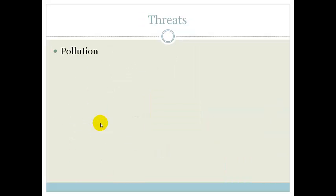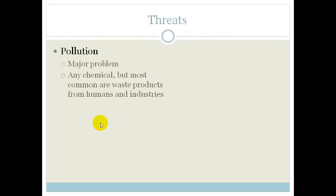The threats. The main threat is pollution. This is a major problem. Water is one of our most valuable resources, and it is slowly becoming more and more polluted. The main source of pollution comes from humans and industries—it's our waste products. We need to be careful not to litter and not to cause pollution in the water.